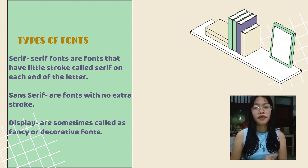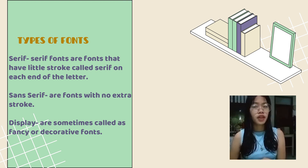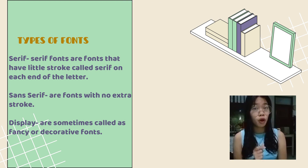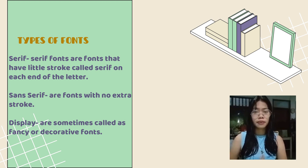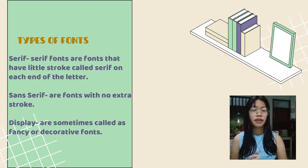Sans serif fonts are fonts with no extra stroke — sans simply means without serif, as 'sans' is a French word for 'without.' These fonts are normally found in mobile phones and computer screens. Examples are Calibri, Arial, and Roboto. Display fonts, sometimes called decorative fonts, can be script, blackletter, or all caps. These types of fonts are used for special occasions like invitations, titles, or posters. Examples of display fonts are Advertising Script, Bangla, and Forte.